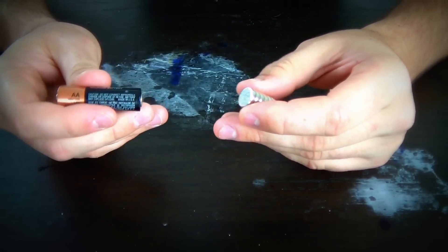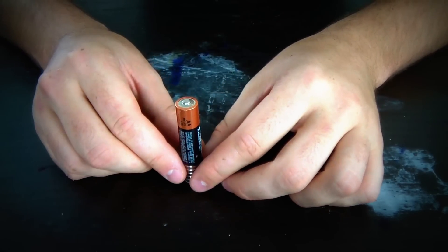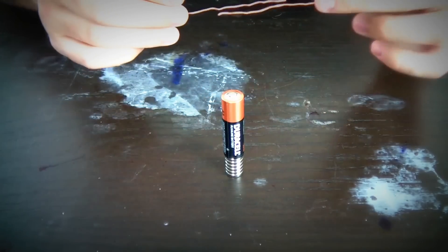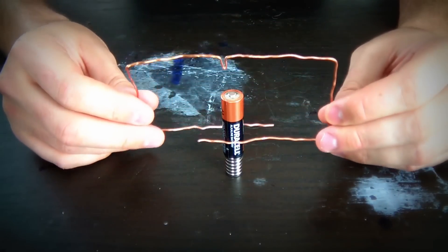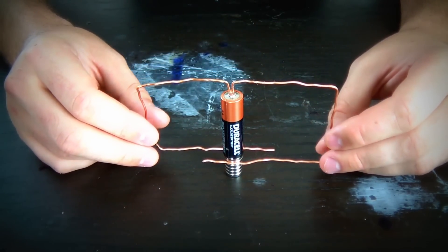we're gonna get our neodymium magnet and attach it to the negative side of the AA battery. Then we're gonna grab our copper wire. Alright, and then put the copper wire over like this in the middle.